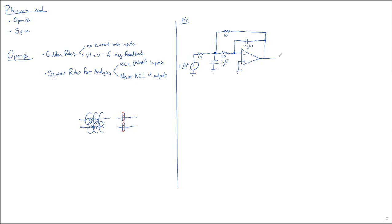So let's just do a quick check here. For this circuit, we have resistors in the frequency domain. We have capacitors — the capacitors all have a negative imaginary impedance, so that looks right. Let's start analyzing it. Jessie, how would you begin?